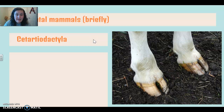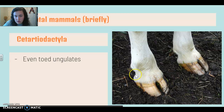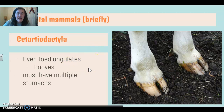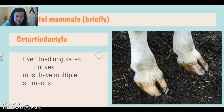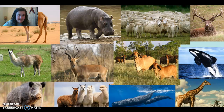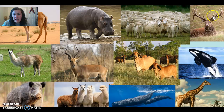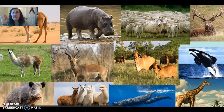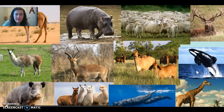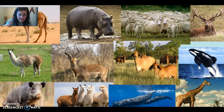Our next group is the Cetartiodactyla, which is a fun thing to say. These are the even-toed ungulates — he's got one, two, three, four toes, which is an even number. They have hooves and a lot of them are going to have multiple stomachs with weird digestion. This group includes camels, llamas, pigs, cows, deer, and sheep. It also includes your whales and orcas. I know what you're thinking — these guys don't have feet, they don't even have legs. I'm going to have a whole separate video about why these guys are in this group, because it is a lot to get into.